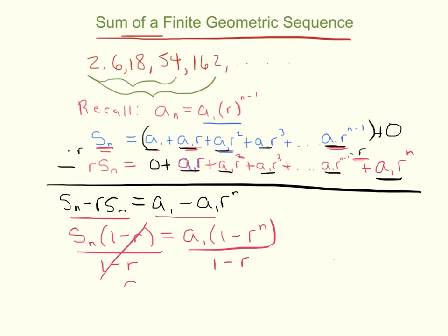Now I'm going to divide by 1 minus r. And I get it. Here's my formula. If I want to know the sum of the first n terms of a geometric sequence, all I need to do is plug in the first term, plug in the r value. Those are usually easy to find.